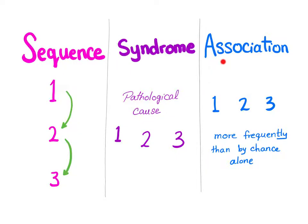Contrast that to association: you have more than one condition, disease, or symptom, but they occur more frequently than by chance alone, and there is no identifiable pathological cause. If we do identify a pathological cause, we change it from an association into a syndrome.